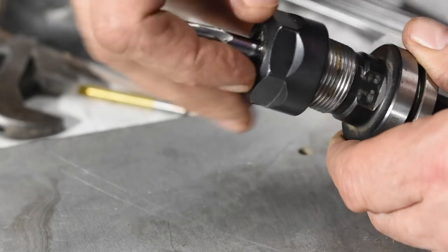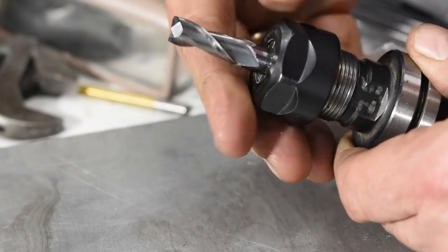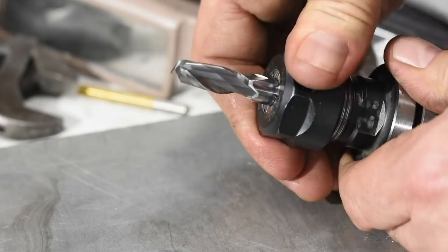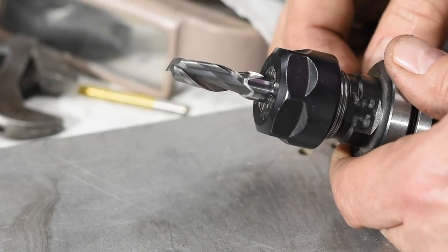Either way, the result's the same. As the collet is forced into the taper, it squeezes the collet, which then clamps down on the tool so it won't fall out.